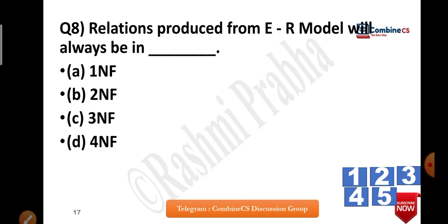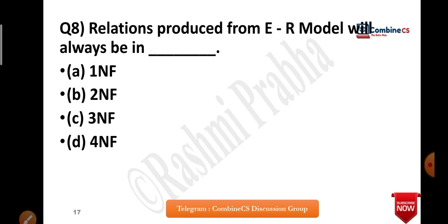Next question: A relation produced from an ER model will always be in which normal form? This is heavily discussed on the Telegram channel. The answer is 1NF. When you design software you first build an ER model — a diagram — then convert it to a relation. The first time you convert a diagram into a relation, it will be in 1NF, because you are simply storing data in single-valued row and column format in the database.